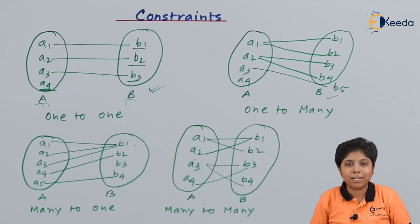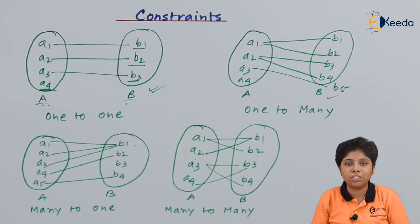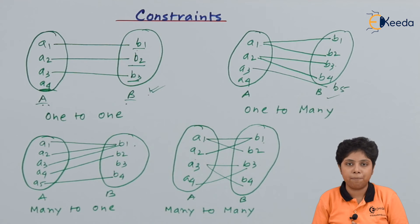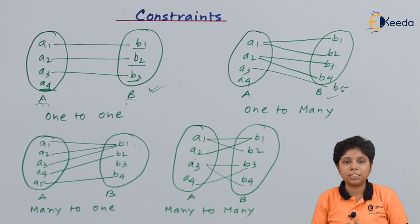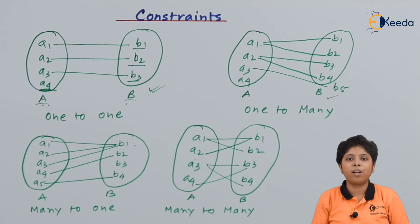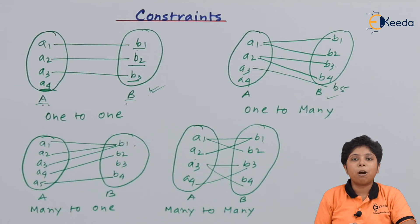It is not always mandatory that if two entity sets have a relationship, changing the direction keeps the participation the same. The participation can be reversed or remain the same — either total or partial — for a relationship between two entity sets.